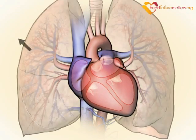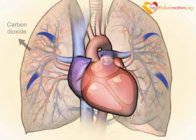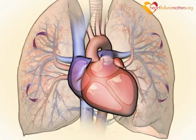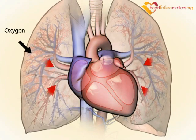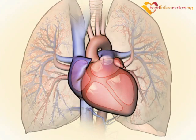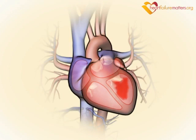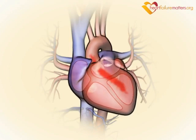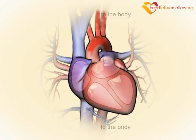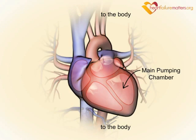Here, carbon dioxide is removed from the blood and oxygen is added. The blood, now high in oxygen, travels back to your heart, this time entering on the left side, where it is pumped out to the rest of the body by the main pumping chamber.